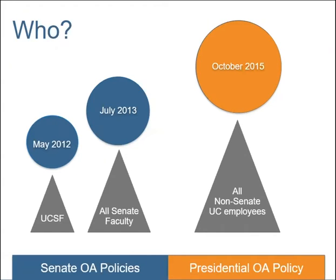In terms of numbers, the Senate open access policies cover around 22,000 people across UC's 10 campuses, and the presidential open access policy covers the remaining 207,000 UC employees. It's difficult to say how many of that quarter million are actually authoring scholarly articles, but we would say it's about 60 to 70,000.